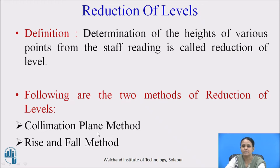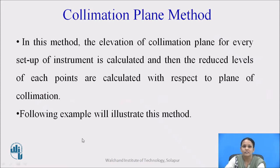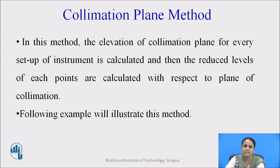The collimation plane method is also called as the height of instrument method. In this method, the elevation of the collimation plane for every setup of the instrument is calculated, and then the reduced levels of each point are calculated with respect to the plane of collimation. Plane of collimation means it is the height of the instrument from the surface of the ground level.